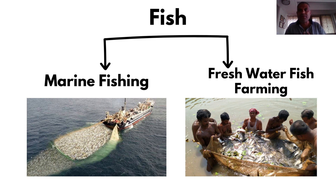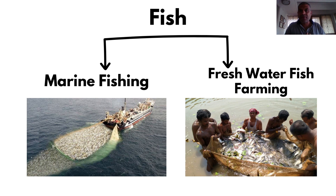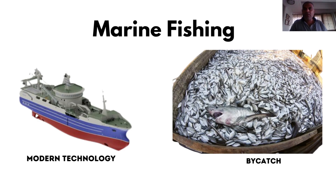In India, for marine fish we mostly use capture - we take boats, lay nets, and catch wild populations of fish. For freshwater, where we have dams and large lakes, the government puts in young fish and then gives out contracts for fishing, which is fish farming. Let's look at these two briefly, beginning with marine fish.